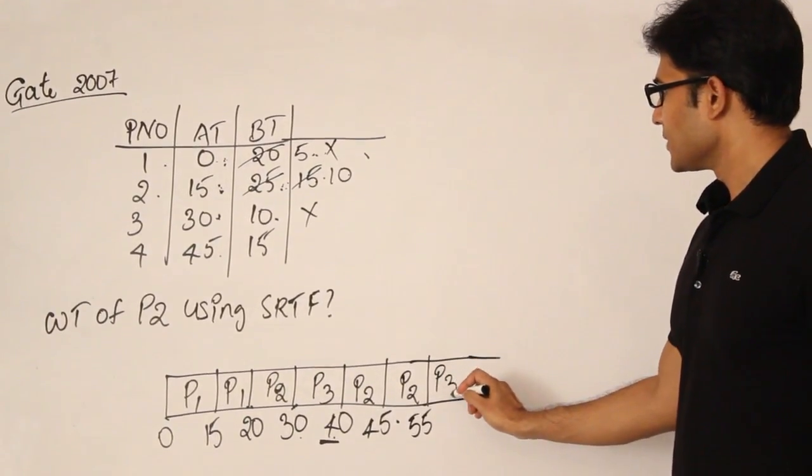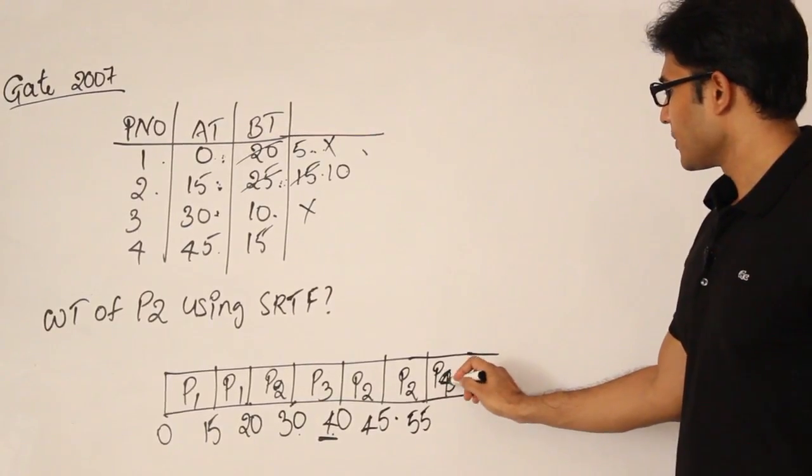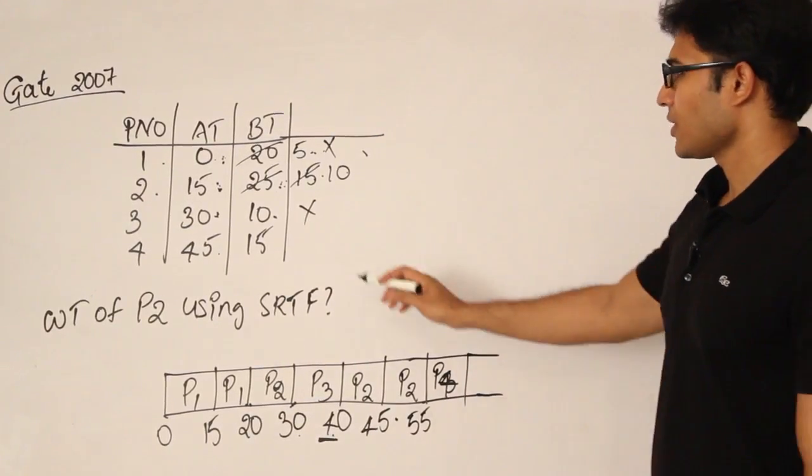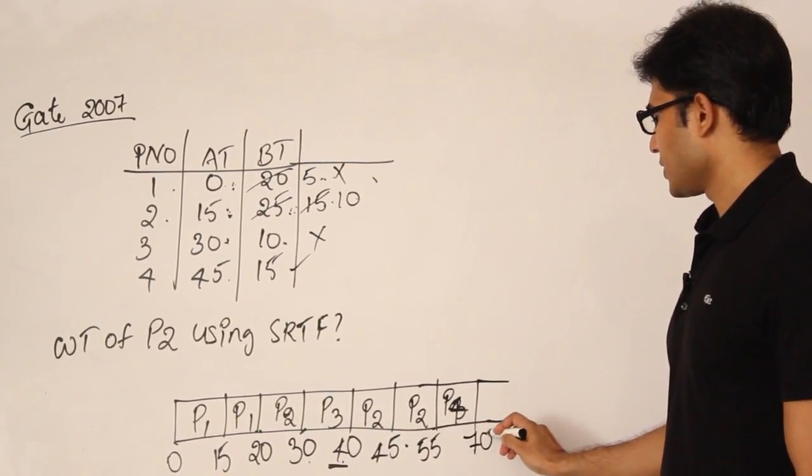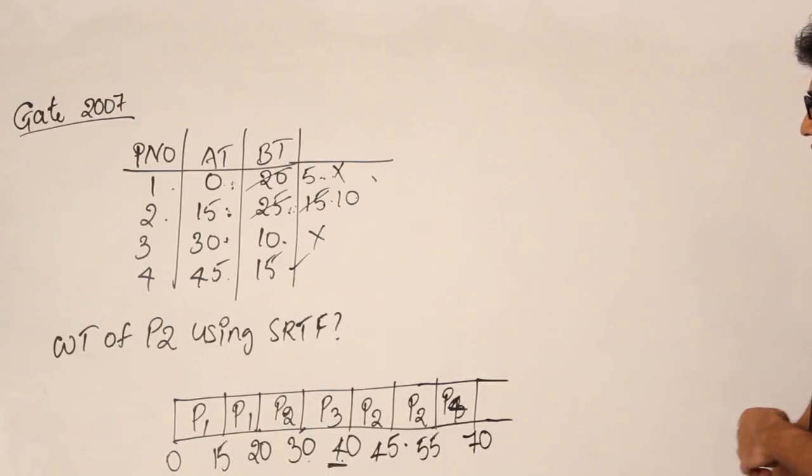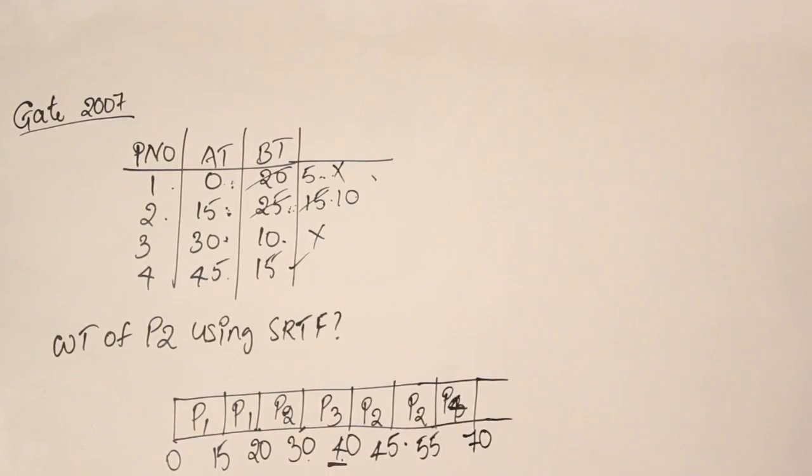And what about next one? P4. That is only remaining. Therefore P4. How much time does it need? 15. So if I go with 15 it is going to be 70. So that is how we could finish it off.